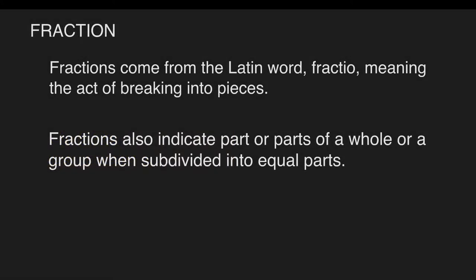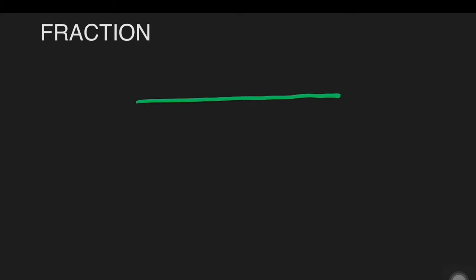Fractions come from the Latin word fractio, meaning the act of breaking into pieces. Fractions also indicate part or parts of a whole or a group when subdivided into equal parts. For example, if we have a rope and we will try to divide the rope into five equal parts.